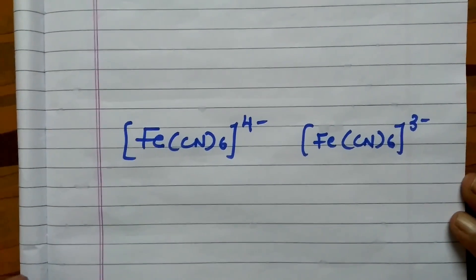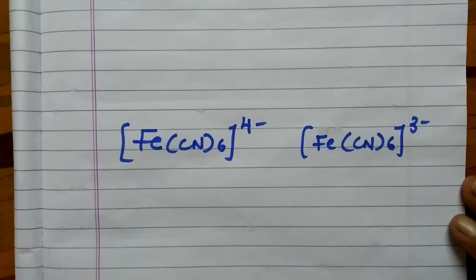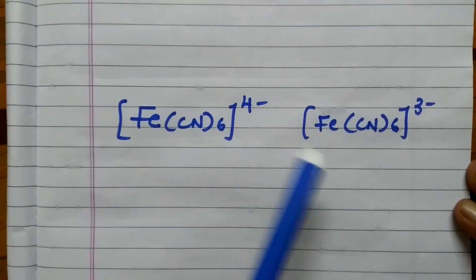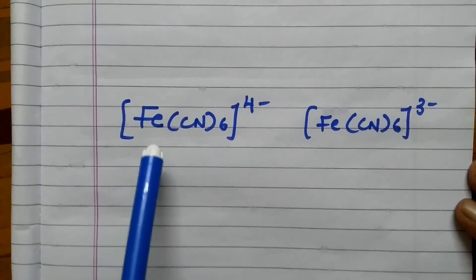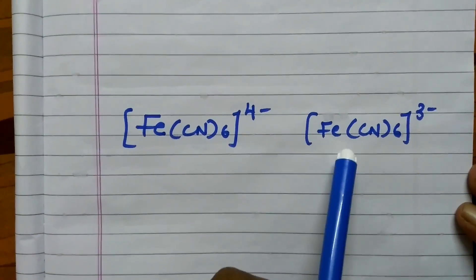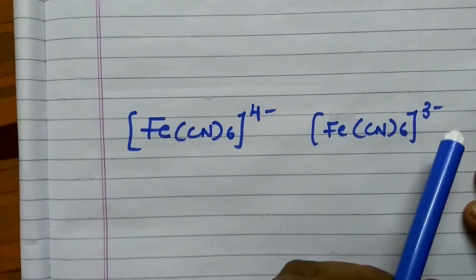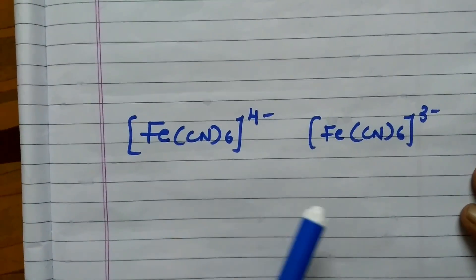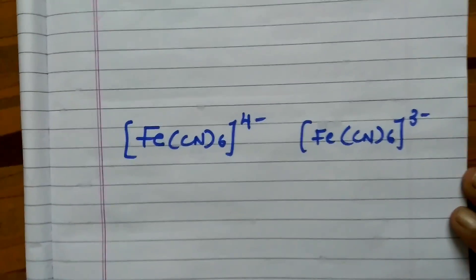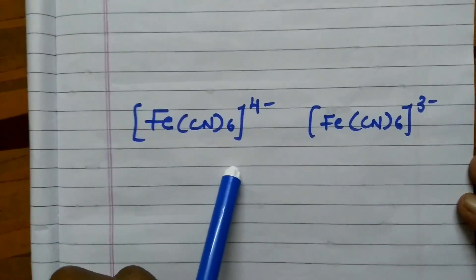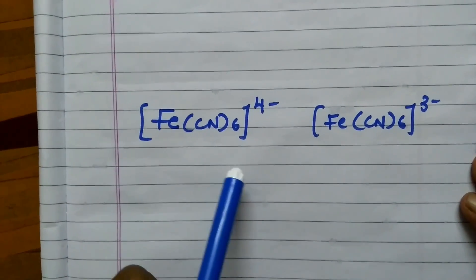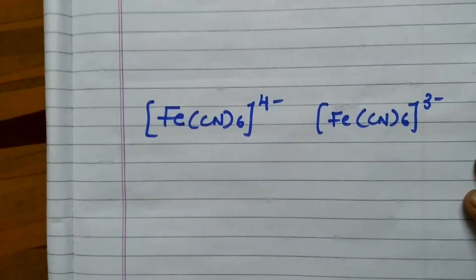Hi students, welcome to my channel Komali M. In these two complex ions, Fe(CN)6⁴⁻ and Fe(CN)6³⁻, which complex ion is more stable? At the end of this video, you will be able to identify the stability of the complex ions.